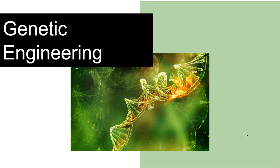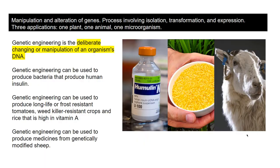Now looking at genetic engineering. Genetic engineering is the manipulation and alteration of genes. We must look at the process involving isolation, transformation, and expression, and we have to learn three applications: one from a plant, one from an animal, one from a microorganism. A definition for genetic engineering is the deliberate changing or manipulation of an organism's DNA - we're not just doing a breeding program; we're actually in a laboratory deliberately manipulating an organism's DNA.